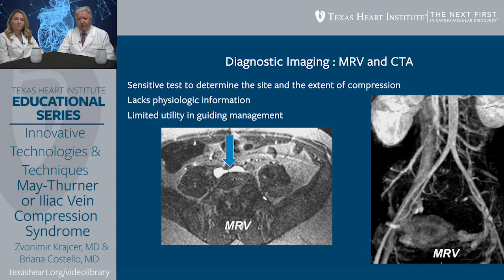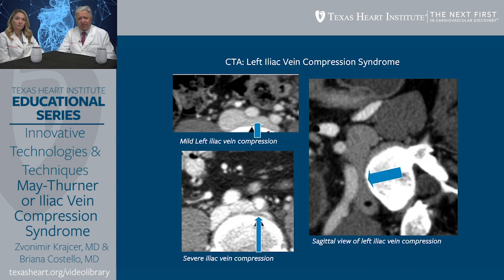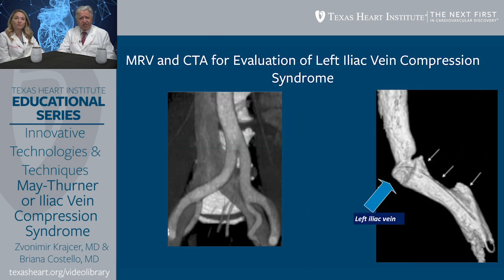Both CTA and MRV are very useful tools in further evaluation. On CTA, we can see mild compression from the iliac artery on the left upper panel, more significant compression on the bottom panel, and again significant compression in the lateral view. Another image shows compression causing dilatation of the iliac vein — so-called pancaking — and when we remove the overlying iliac artery, we can see an indentation in the left common iliac vein. All those tools are extremely important in evaluating patients with this condition.